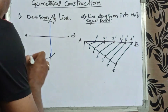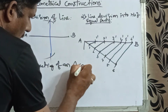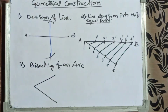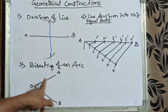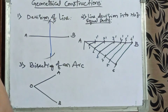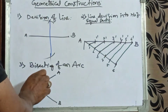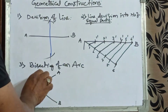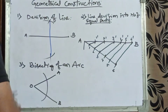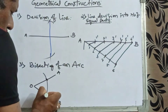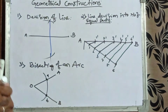Third one is bisecting an arc. Suppose an unknown length arc is there, with origin O, one end B and the other end A. The radius of the arc is unknown — it could be at 20 or 30 degrees, whatever it may be. To bisect it: with O as center, take any blind radius and draw an arc cutting the two boundary lines at small a and small b. Now join small a and small b by a straight line.